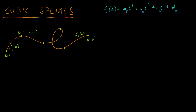Just like in the previous video, we have to solve for these coefficients using the constraints we know our system has. For example, we know that for f₀, at time equals zero — the beginning of the f₀ section — we want the roller coaster to be at x₀. At time equals one we want it at x₁. And f₀ at time zero should equal x₀, and f₀ at time one should equal x₁.